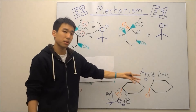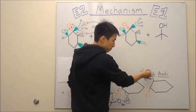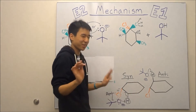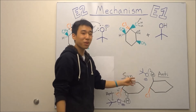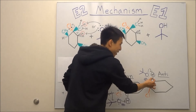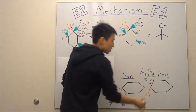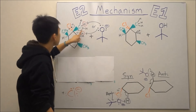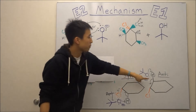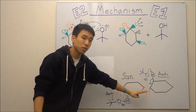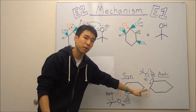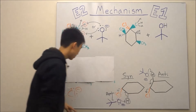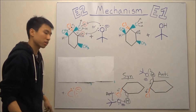You like anti. Because if you do anti, your base grabs your hydrogen, and then the bond migrates over just like before. The anti-hydrogen's bond moves over, you overload your carbon with too many bonds, you kick out the leaving group, and you get your chlorine molecule.